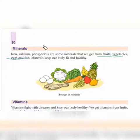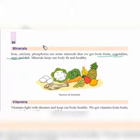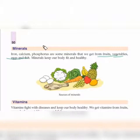Iron, calcium, and phosphorus are some minerals that we get from fruits, vegetables, eggs, and fish. Minerals keep our body fit and healthy. These are micronutrients — our body needs them in small amounts. Iron is a kind of mineral; it is necessary for our body. These are different from an iron rod — here we mean the mineral iron.